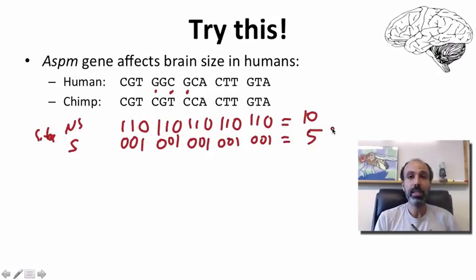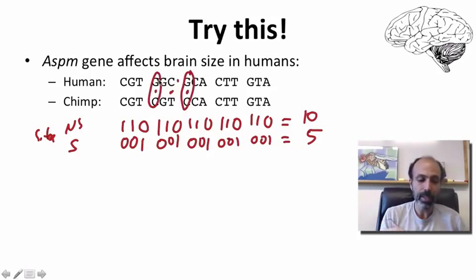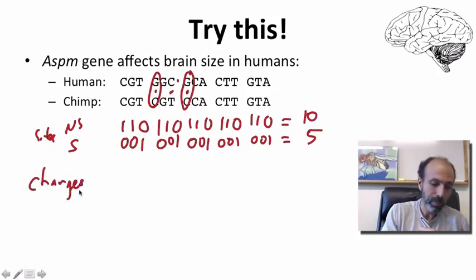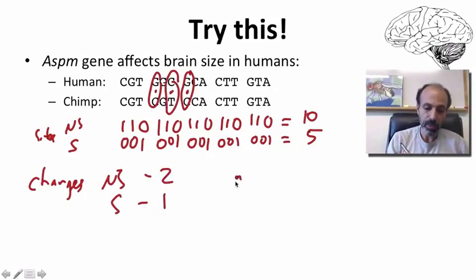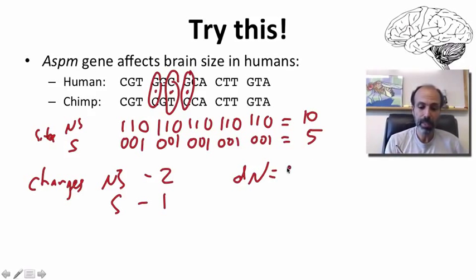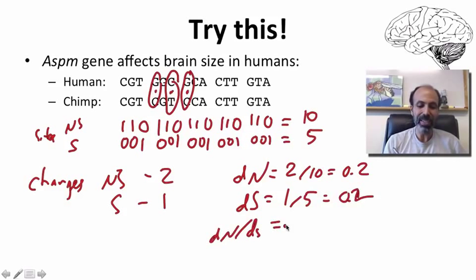So we have 5 synonymous sites and 10 non-synonymous sites. dN equals non-synonymous changes over non-synonymous sites: 2 over 10, which equals 0.2. dS equals synonymous changes over synonymous sites: 1 over 5, which equals 0.2. So dN/dS is very easy to calculate in this case — 0.2 divided by 0.2 equals 1.